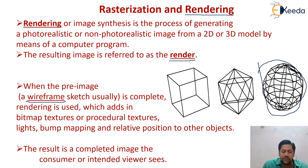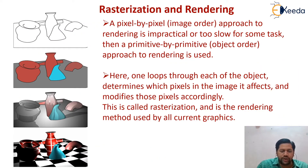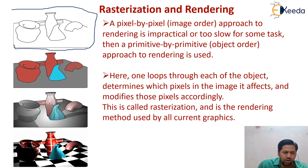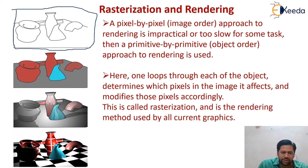The result of rendering is a completed image that the viewer sees. Looking at the diagram: the pre-image or wire frame sketch contains different objects with no color. In the rendering process, initial colors are given to the different objects, then changes are made to the colors, and the images are further processed to produce the final rendered image.